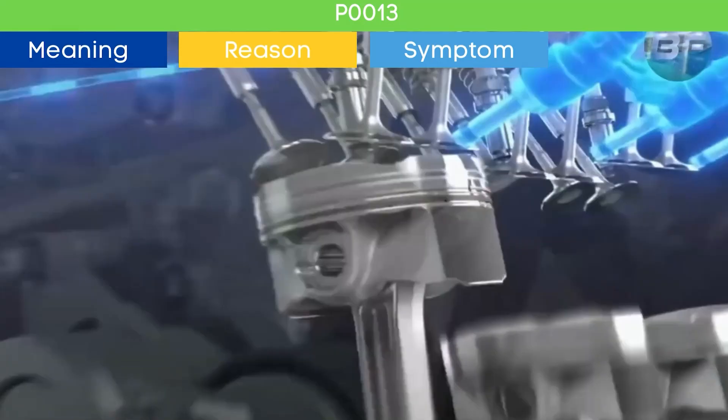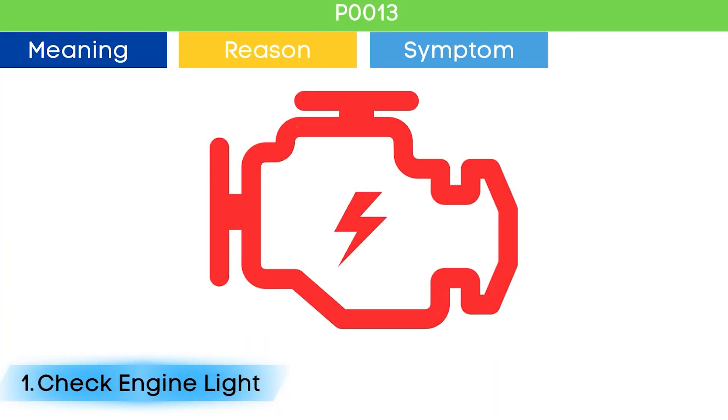Symptom number one: check engine light. The check engine light comes on if there are any active trouble codes related to EMS.